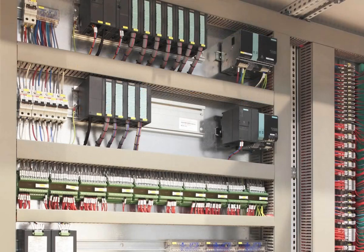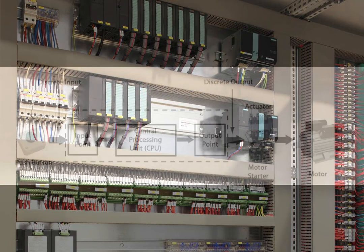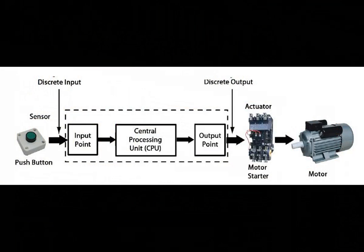The PLC reads the status of digital and analog inputs connected to it. This information is used to determine the current state of the controlled process. The PLC then executes the user program logic, typically written in ladder logic or another programming language, which determines the actions the PLC should take based on the input conditions.